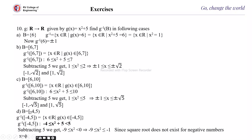The next case is b from -4 to 5, with 5 exclusive. The condition becomes -4 ≤ x² + 5 < 5. Subtracting 5 gives -9 ≤ x² < 0. Since x² cannot be negative, there is no real x satisfying x² < 0, so no value is obtained and the result is the empty set.